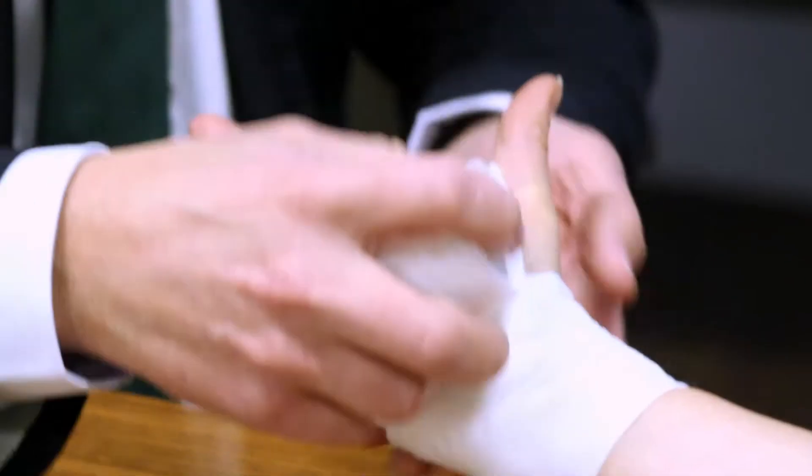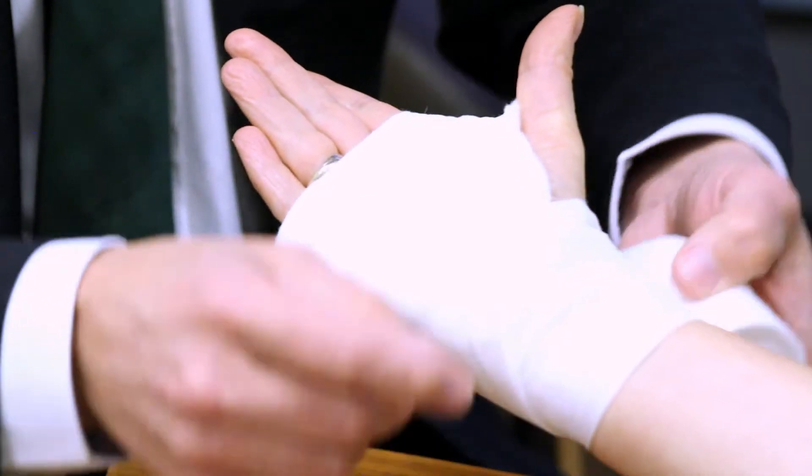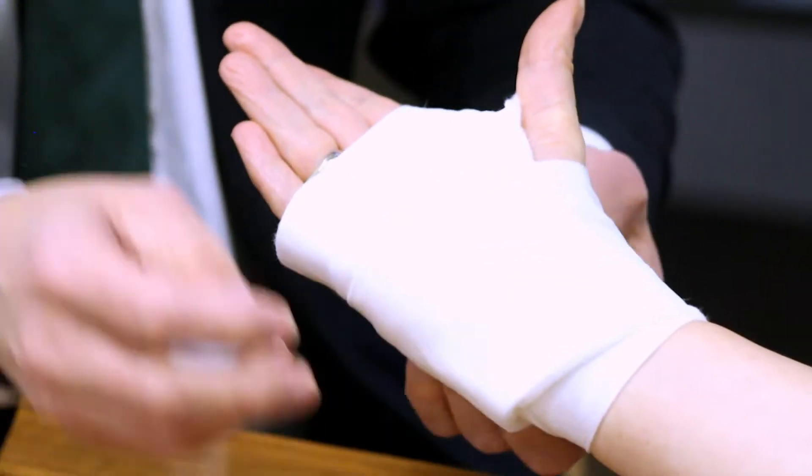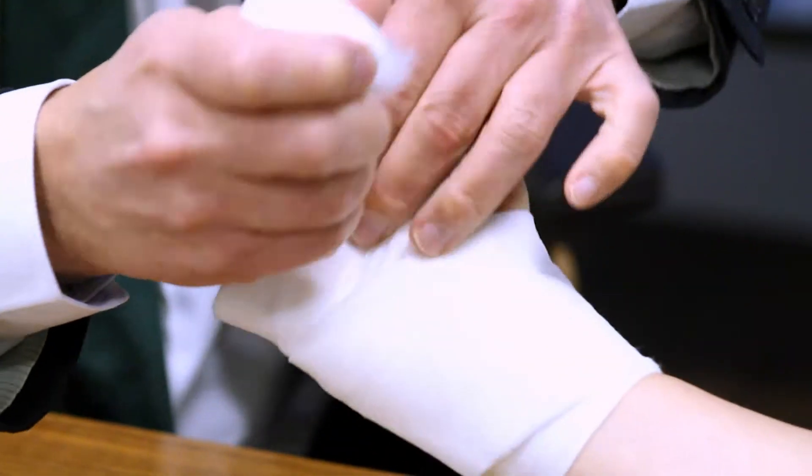And we wrap this usually around the wrist for carpal tunnel surgery, and around the thumb like that, leaving the thumb free. And we usually try to leave these joints free as well. So we'll tear this off like that.